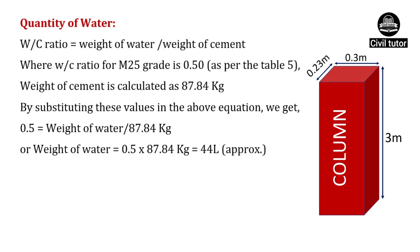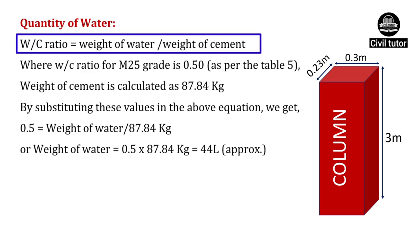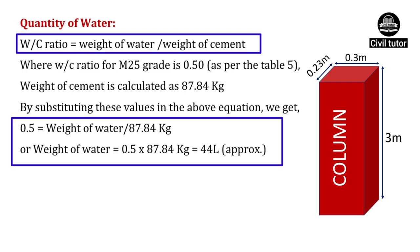Now we need to calculate the quantity of water. The water-cement ratio equals weight of water upon weight of cement, and the value for M25 grade of concrete is 0.5. Substituting, 0.5 equals weight of water upon 87.84. Simplifying, weight of water equals 44 liters. A similar procedure is followed for other grades as well.